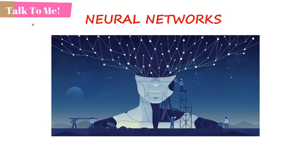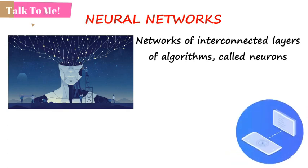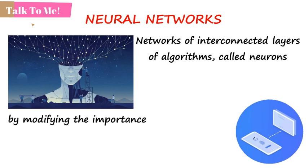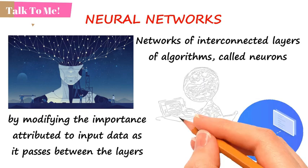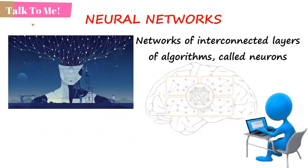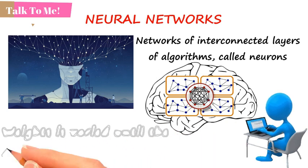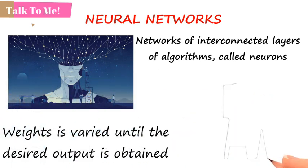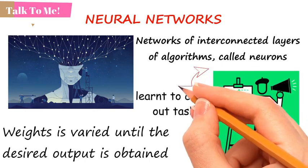These are the brain-inspired networks of interconnected layers of algorithms called neurons that feed data into each other and which can be trained to carry out specific tasks by modifying the importance attributed to input data as it passes between the layers. During the training of these neural networks, the weights attached to the different inputs will continue to be varied until the output of the neural network is very close to what is desired, at which point the network will have learned how to carry out a particular task.